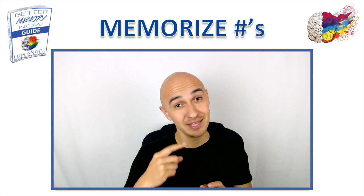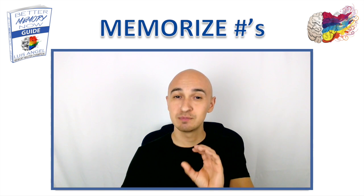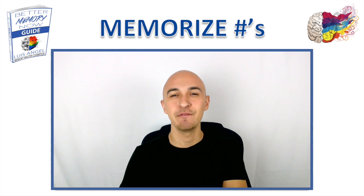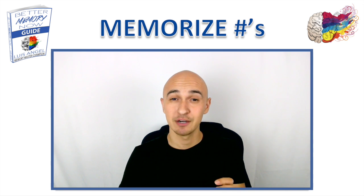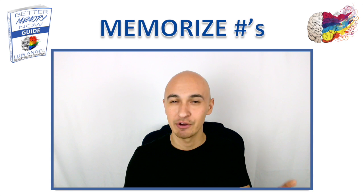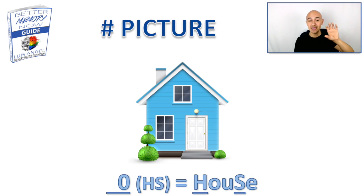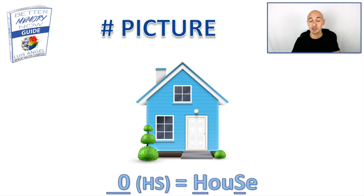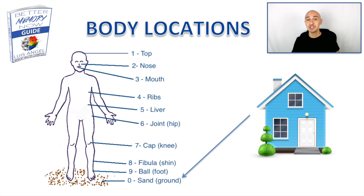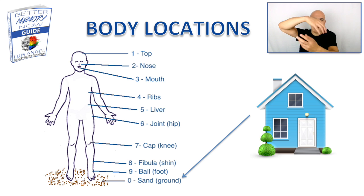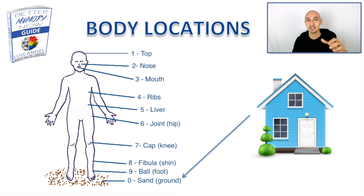For these numbers, because they're only single digits, we're going to throw in an H sound in front of the consonant sound for each number. So house would be our picture for number zero, because the S sound for zero comes at the end and the H sound at the beginning — just throw in some vowels and you get house. To help memorize it faster, associate it to your body location: picture the house spinning round and round on the sand on the ground.